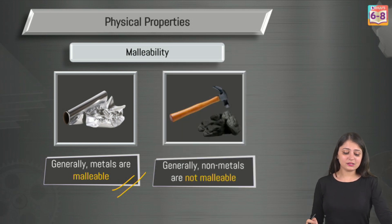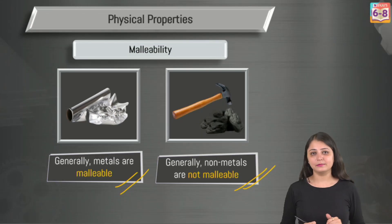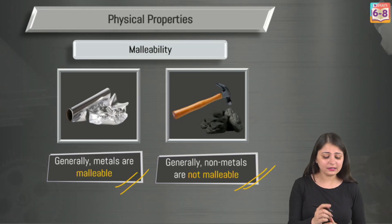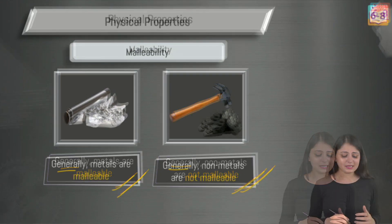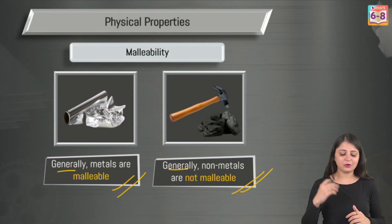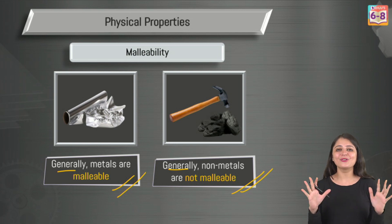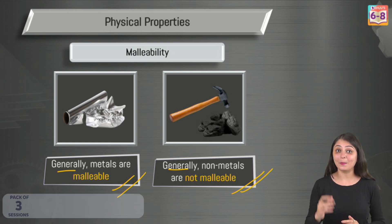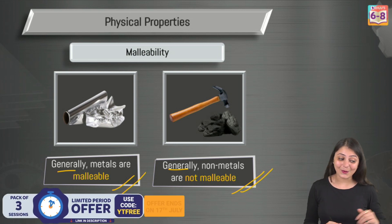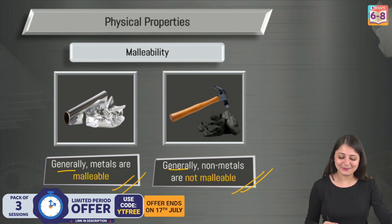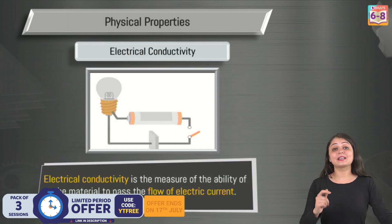Nonmetals, on the other hand, are non-malleable. Notice the word 'generally' — metals are generally malleable and nonmetals are generally non-malleable. Chemistry is full of exceptions. Mercury is a metal and should be malleable, but it's not. So yes, exceptions exist.